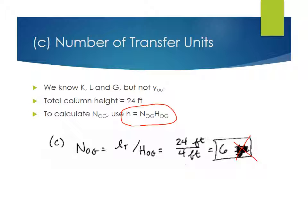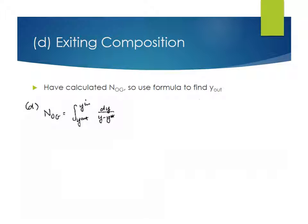So we have calculated NOG, but we would like to find out what Y is leaving the column. And to do that, we can start with the expression for what NOG is supposed to be given by. So it's the integral from Y out to Y in of DY over Y minus Y star, where Y star is the equilibrium mole fraction that we would have in the vapor phase.